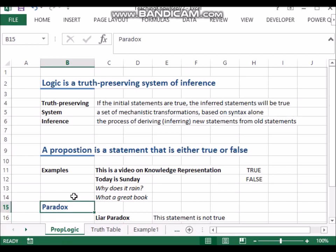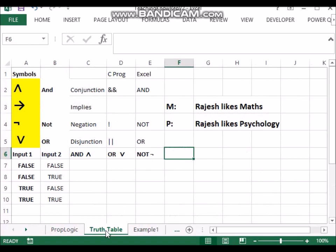So we talked about what is proposition and what is logic. Now let's move to something which is called as a truth table.